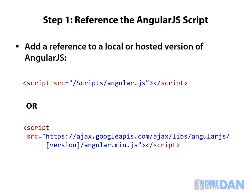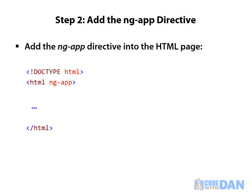Step one is pretty easy. We either grab the script and copy it locally and reference it, or we can go to the Google-hosted CDN and supply the version of Angular we'd like, such as 1.2.2 or whatever it may be. Once we do that, Angular is ready. But the next step is we need to tell Angular this is an Angular application — including the script is not enough. So the way we do that is we add ng-app.